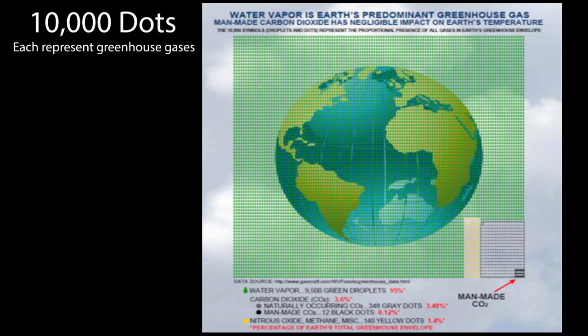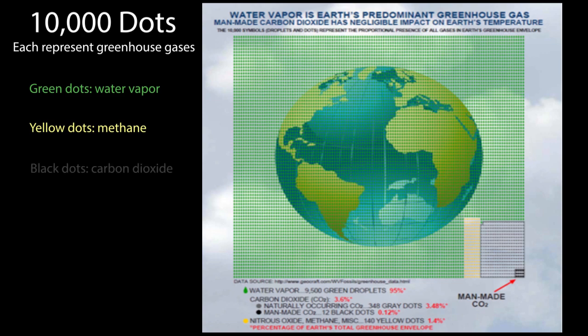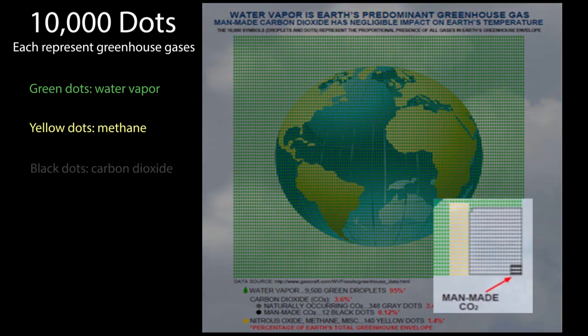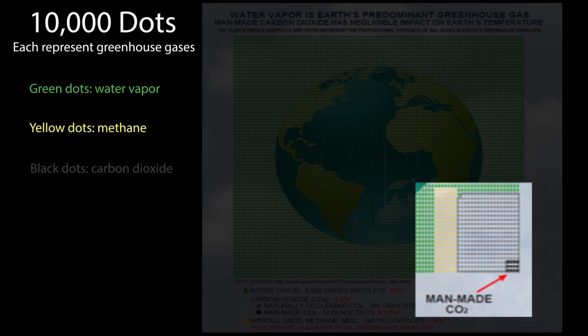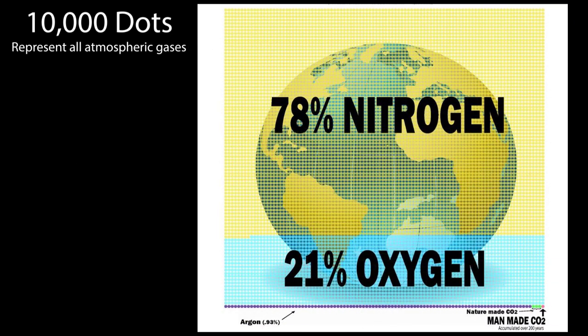This one is a little different — this has 10,000 dots, each one representing greenhouse gases. The green dots are all water vapor, the yellow is methane, the black is carbon dioxide. But the 12 dots in the bottom right corner are all of the carbon dioxide greenhouse gas that we contribute.